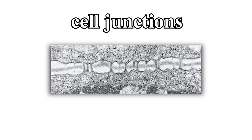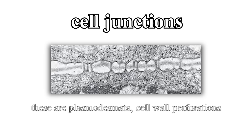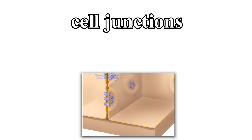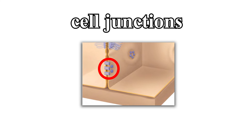Oftentimes, cells will communicate with each other via sites of direct physical contact. These sites are called cell junctions. In plant cells, cell walls of neighboring cells are perforated with plasmodesmata, channels that directly connect the cytoplasm of two distinct cells. Depending on the circumstance, anything from small solutes to RNA can pass through these channels. In a similar fashion, gap junctions in animal cells create cytoplasmic channels between two distinct cells.